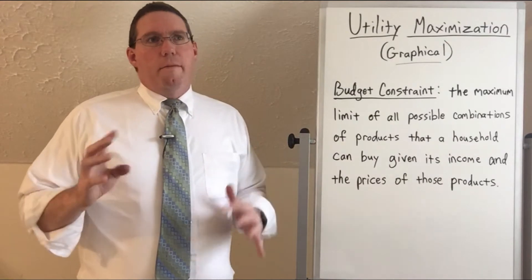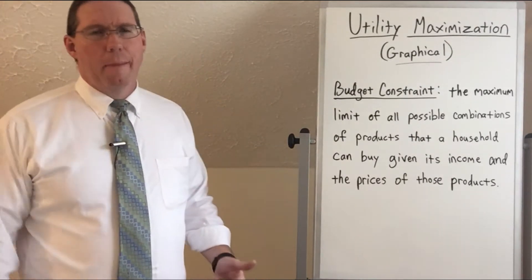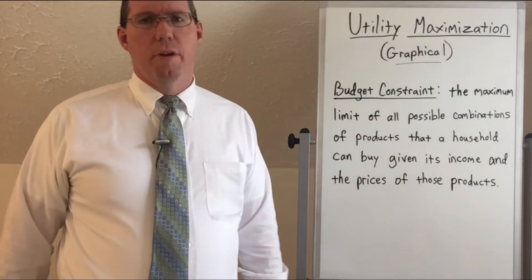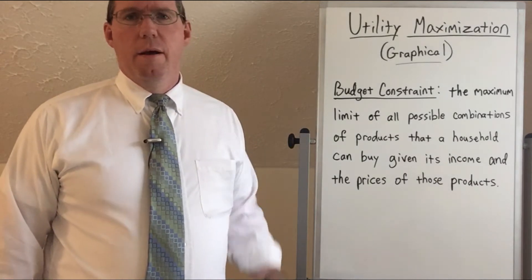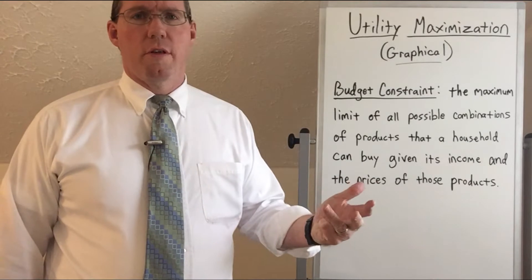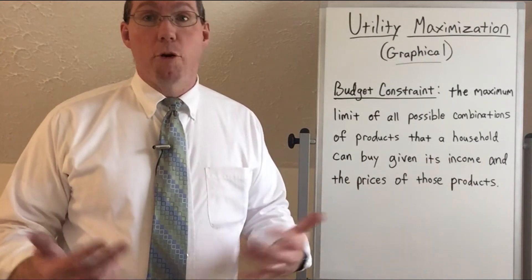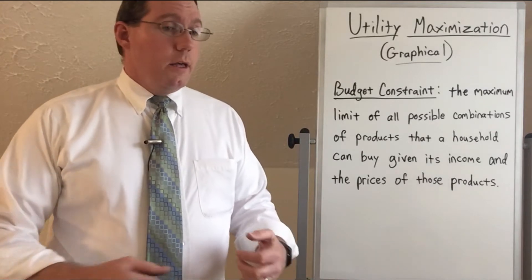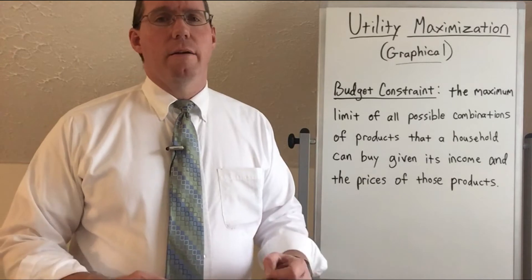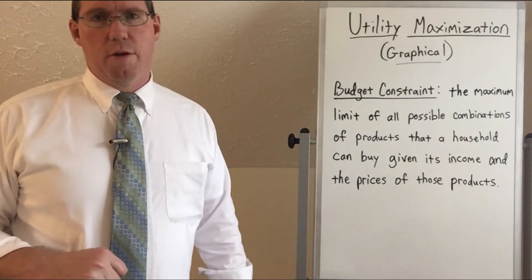Let's think about your household and all of the things that you buy. How many different things do people buy in your household? It's got to be at least a couple hundred things — bread, milk, shoes, shirts, phone service, Amazon Prime or Netflix. If you made a list and sat down for a few hours, chances are it's a couple hundred things.